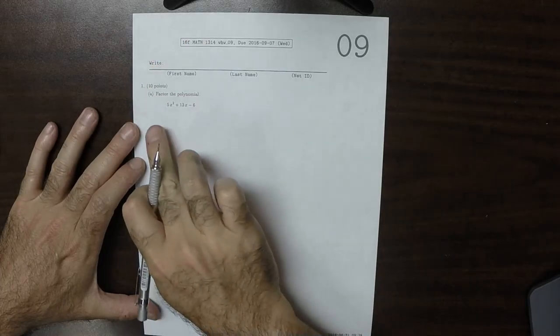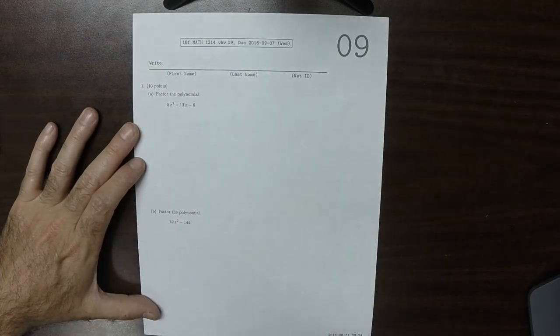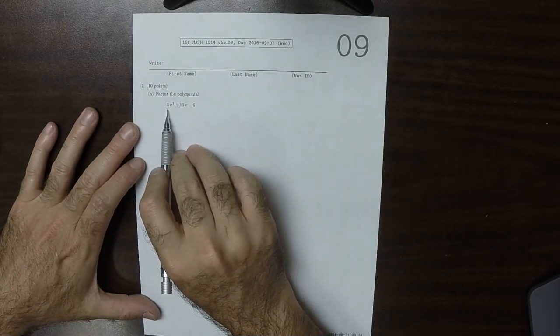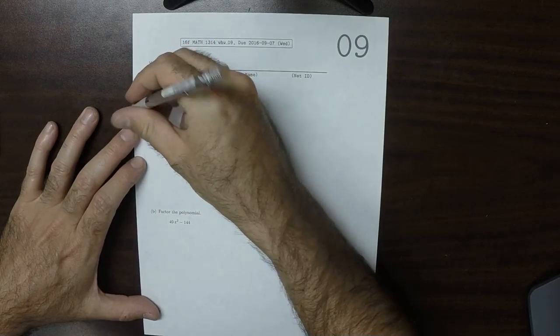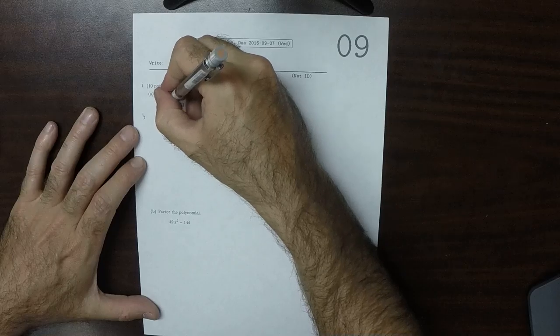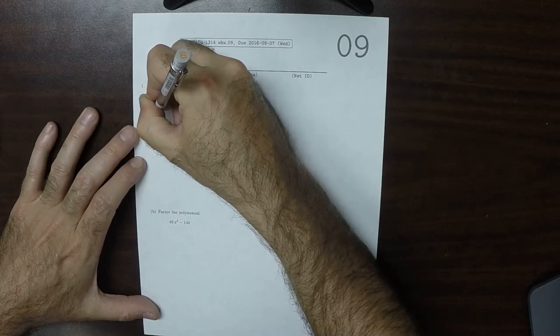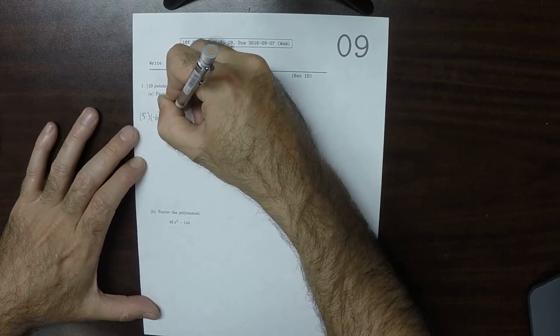Well, because this is not a monic polynomial, it has a leading coefficient of 5, we'll use the method where we want to find factors. So first off, 5 times negative 6 is negative 30.